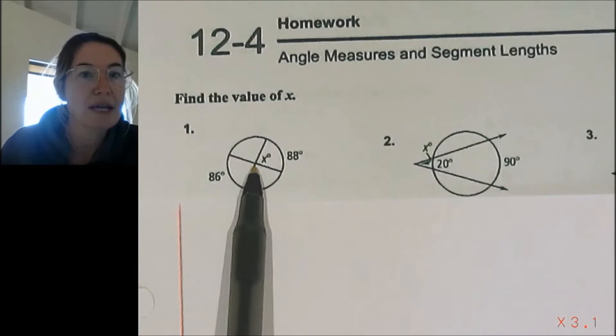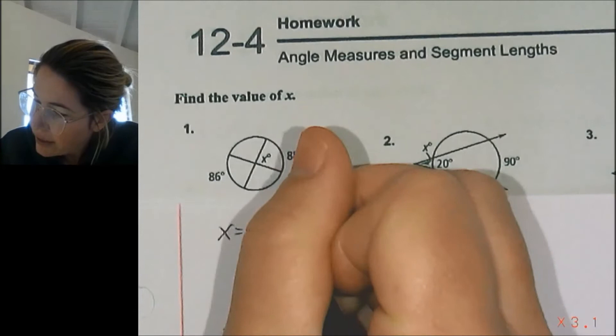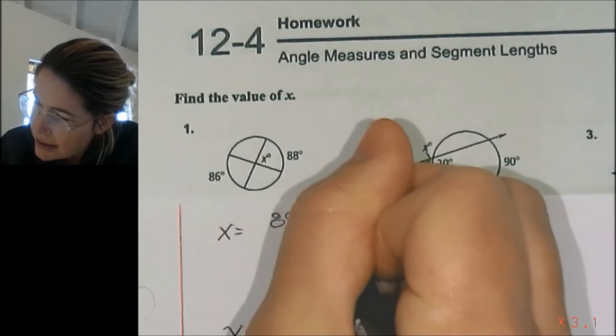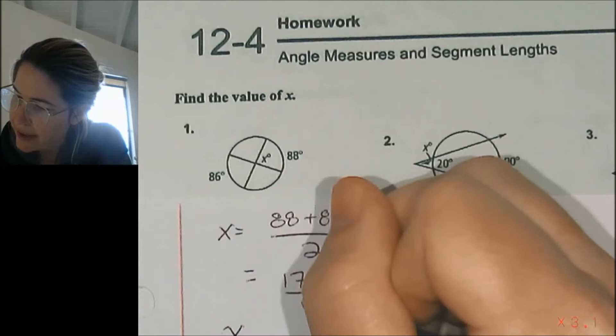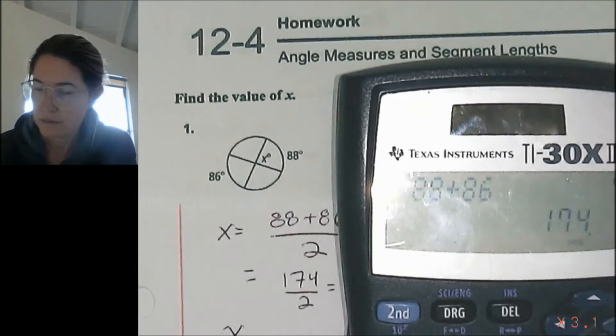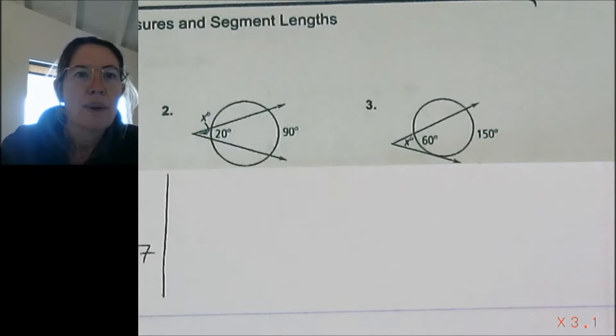Number one: we are looking at an angle formed when chords are intersecting inside. So my two chords are intersecting inside, which means the angle formed is equal to the sum of the intercepted arcs — 88 plus 86 — divided by 2. So 174 divided by 2 gives us 87 degrees.